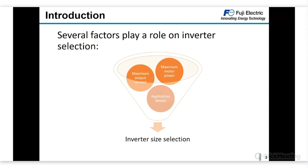As an introduction, as you can see in this picture, several factors play a role in inverter selection. This is an example of how to select inverter size — what size of inverter to use in a given application. As you can see, there are several parameters to consider, like the maximum output current needed, motor power, and application details such as ED or ambient temperature. These factors combine to determine what size of inverter to use.